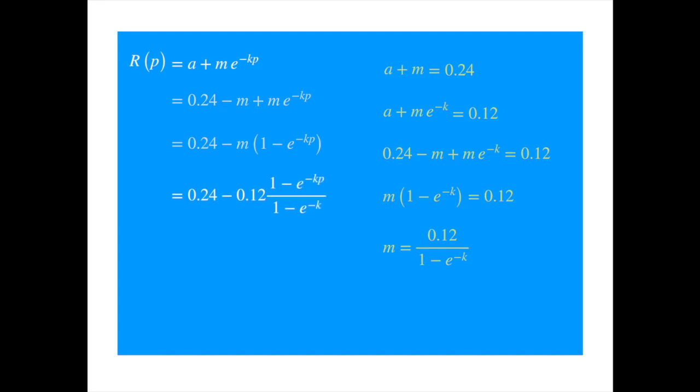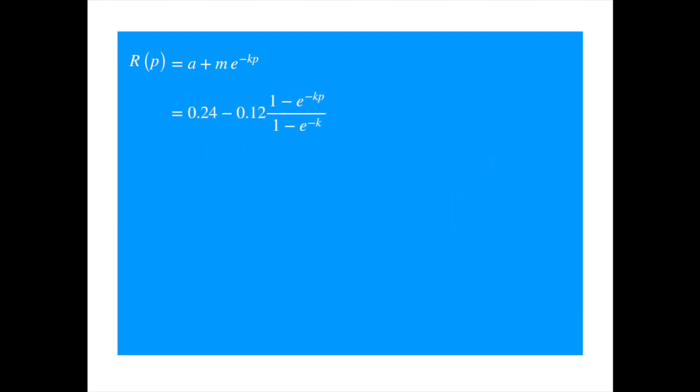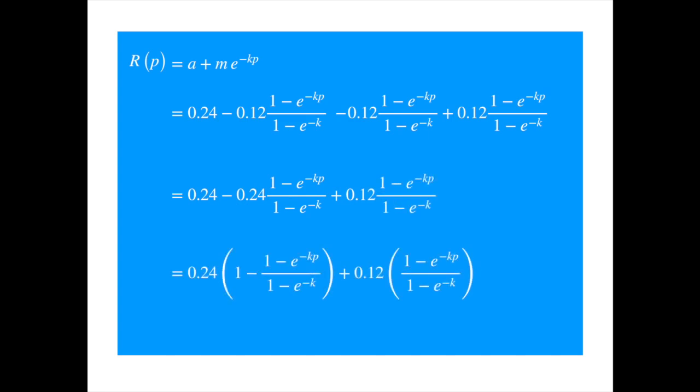We just need to format it now. Add and subtract the last terms. Combine the middle terms. And when we factor out 0.24, then we obtain the formula in the familiar form.